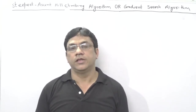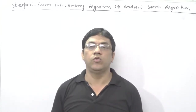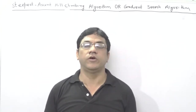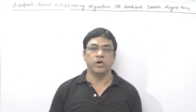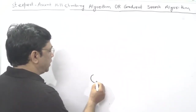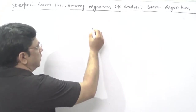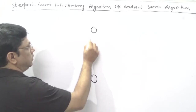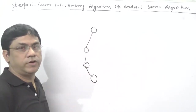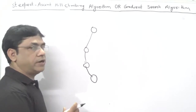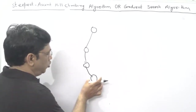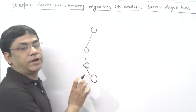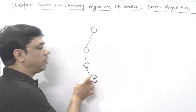Before explaining the algorithm, let me explain what the Steepest Ascent Hill Climbing Algorithm is and how it differs from the basic hill climbing algorithm. Suppose this is a path from here to here — these are the paths in which you have to find your goal node. In the basic hill climbing algorithm, you take a node and check just its immediate neighbor node to see whether it is better or not.